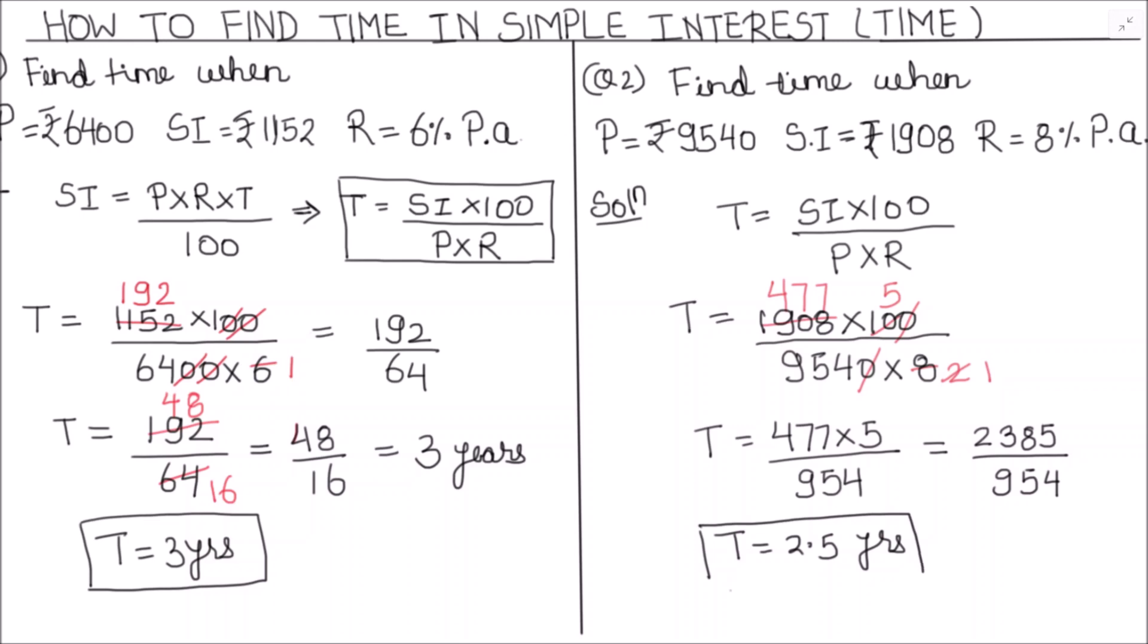This is our final answer. This is how by using the formula T = SI×100/(P×R), we can find the time period in simple interest problems. I hope this video is helpful to you. Thanks for watching.